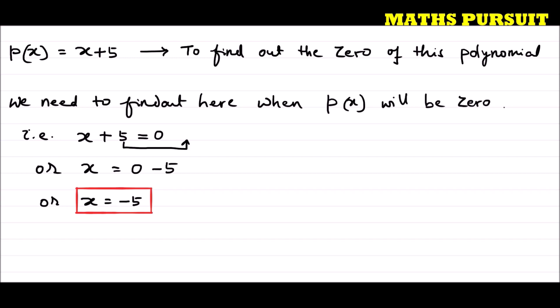So the zero of the given polynomial is -5.